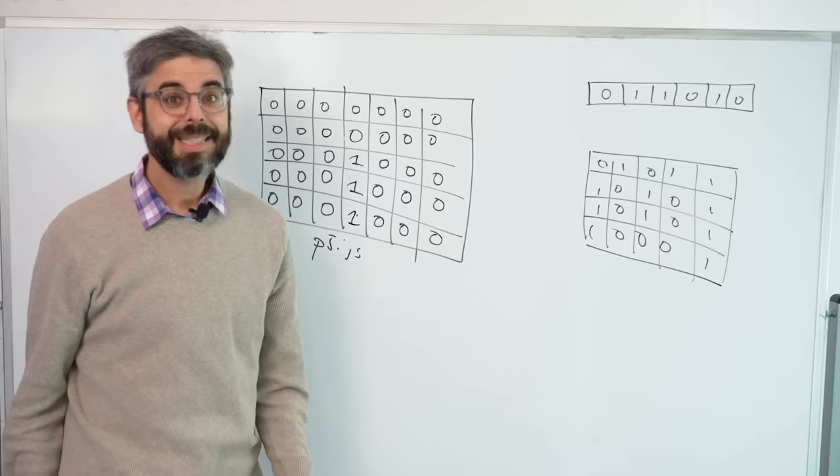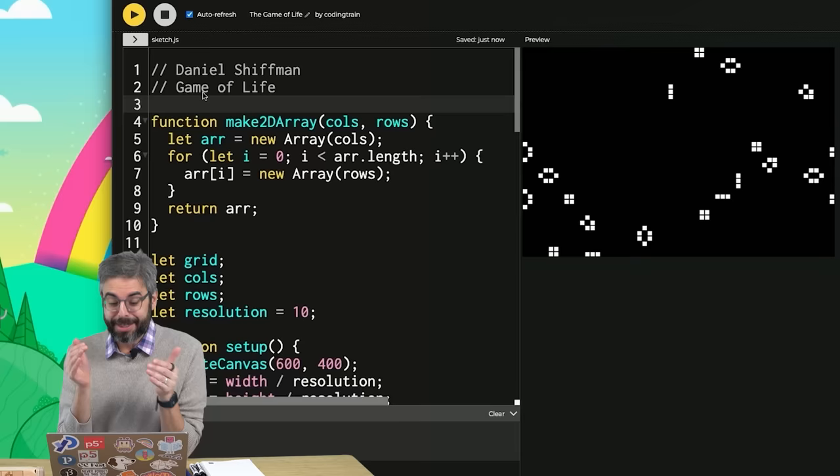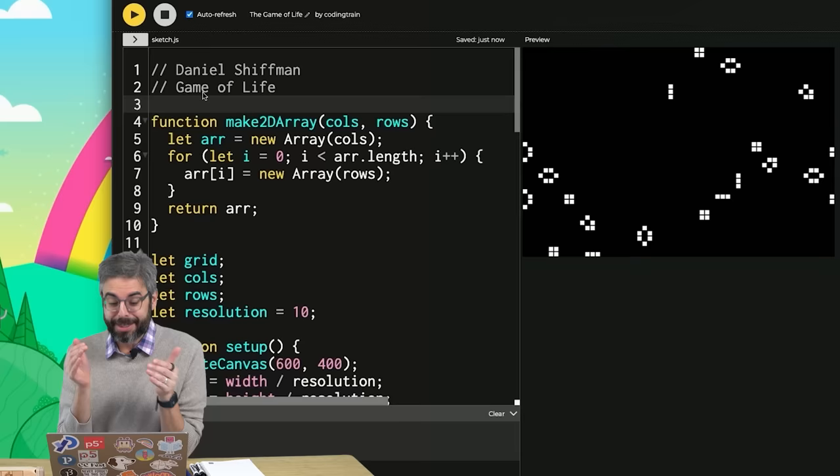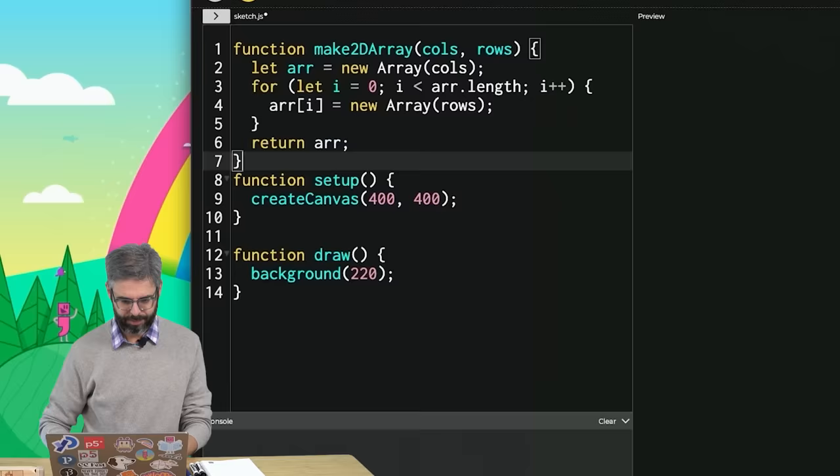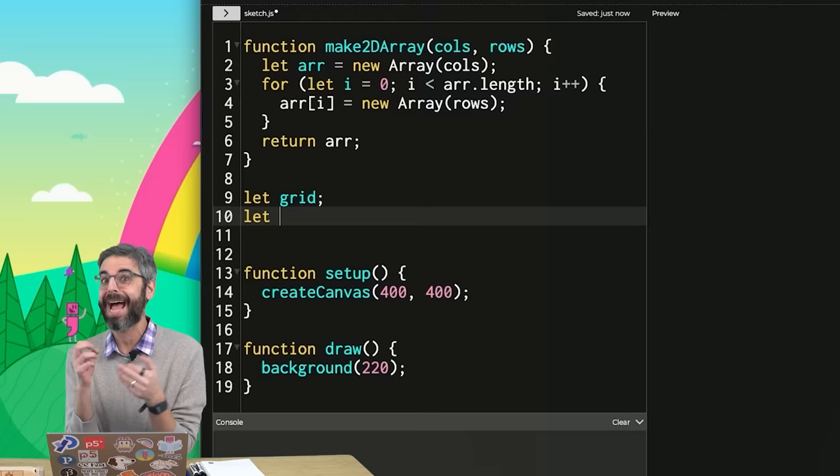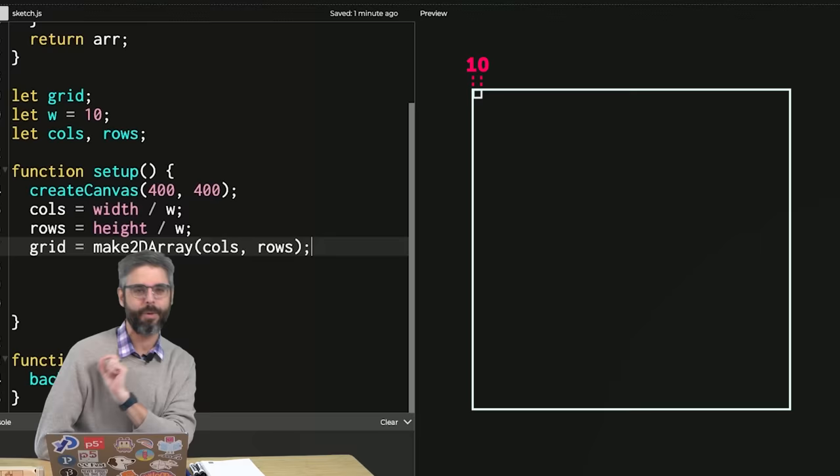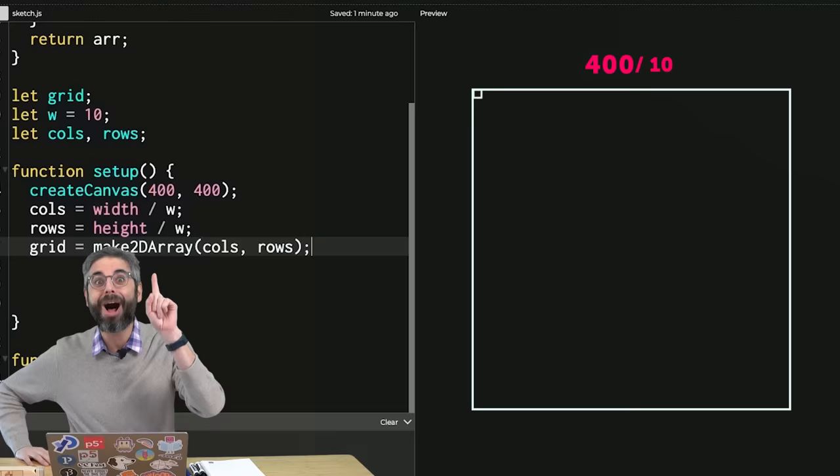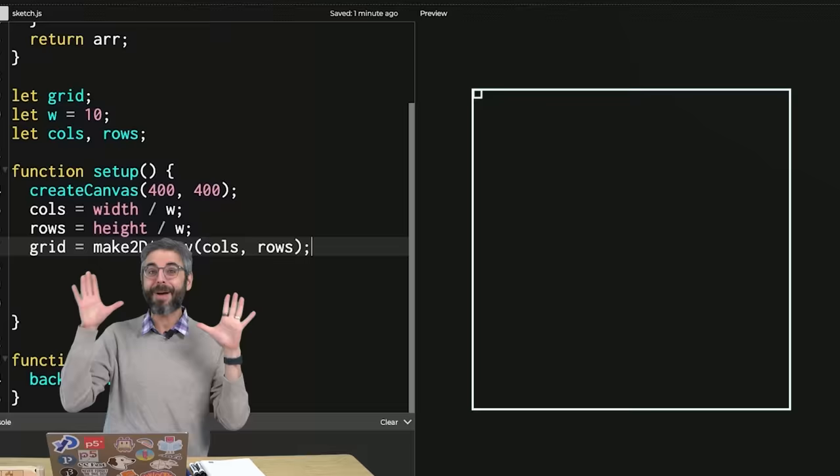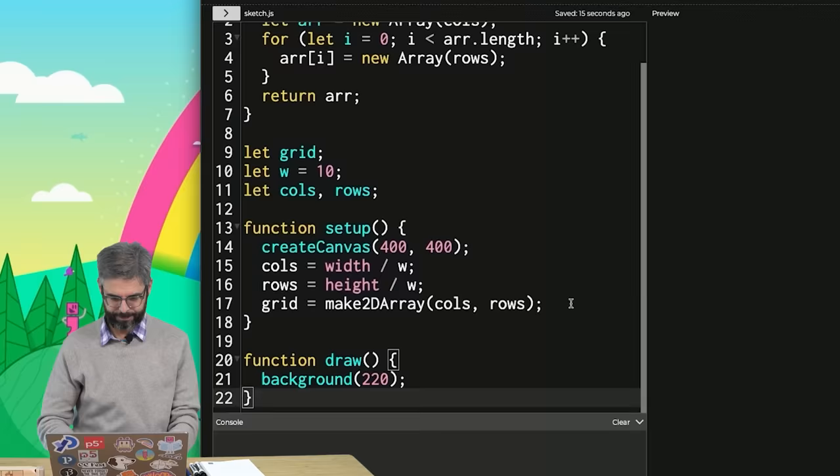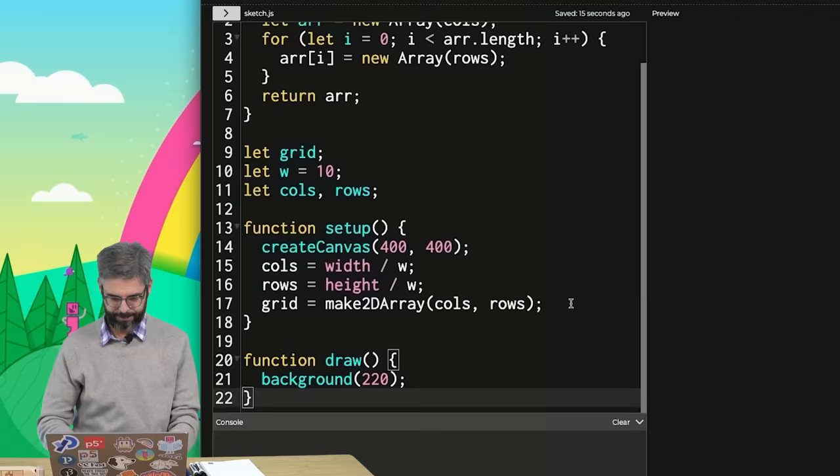Let's begin by implementing only that. To make my life a little easier, I'm going to grab this make2darray function from the game of life coding challenge. Then let's call the space that I'm going to create a grid, and let's establish the resolution of every grain of sand. Now at some point it might be fun to try having a grain of sand be a single pixel, but for now let's have a 10 by 10 rectangle. So I need to establish the number of columns and rows. The number of columns is the width of the canvas divided by the width of one of those little squares.